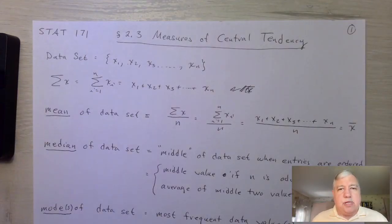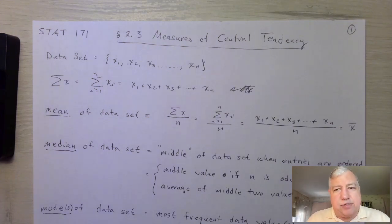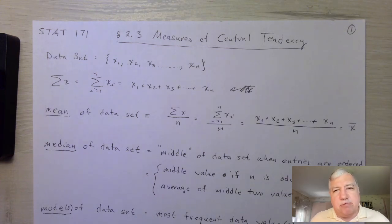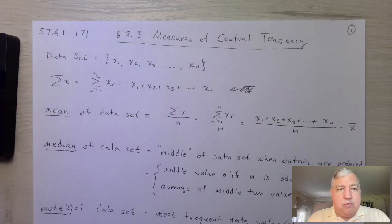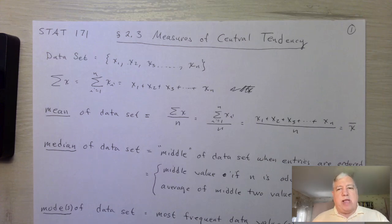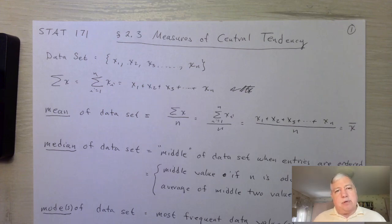Hello. Today we are going to start talking about averages, and more generally we'll be talking about measures of central tendency and data sets. Right now we're just going to assume that the data consists of numbers so we can add them and do other mathematical operations with them. You're probably already familiar with what it means to take an average of something.